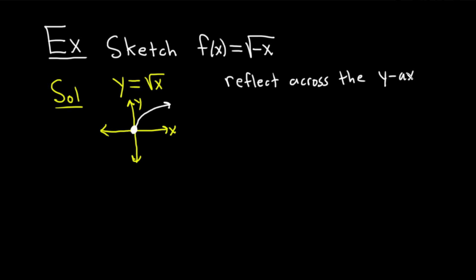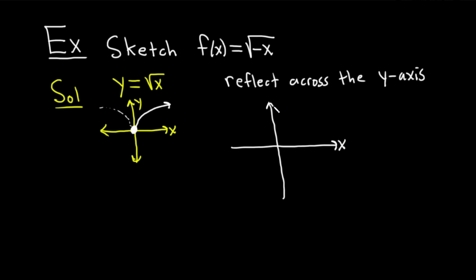Remember the trick: if the negative is in front of the x, you reflect across the y-axis; if the negative is in front of the y, you reflect across the x-axis. In this case the negative is in front of the x, so we reflect across the y-axis. Here's the y-axis and here's the x-axis. Put your dot at the origin and then draw your reflected square root function going to the left. Pretty simple.